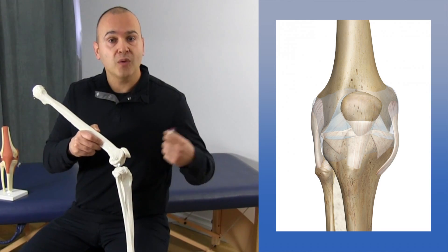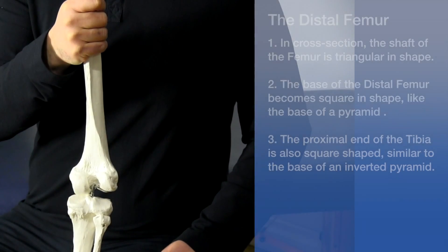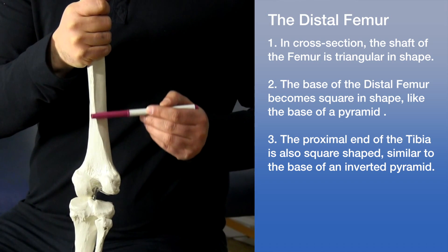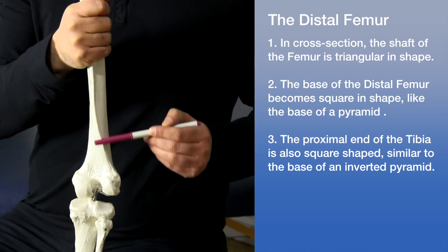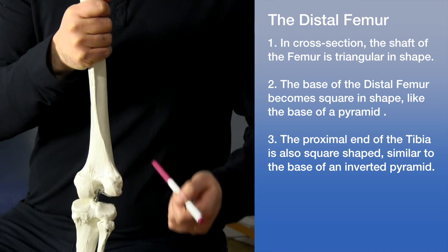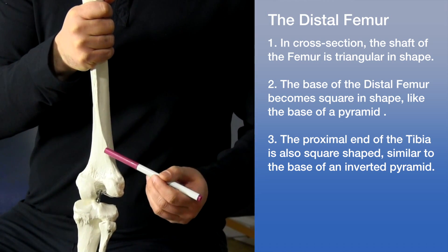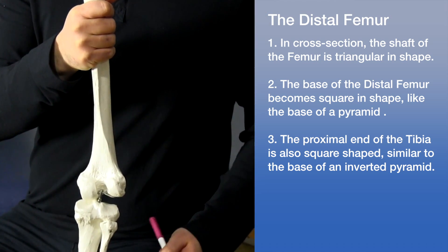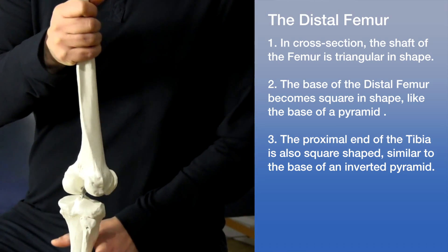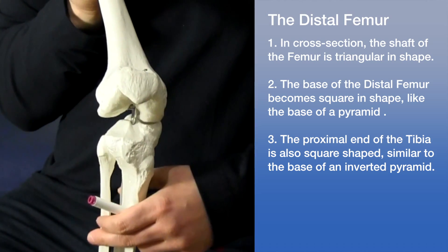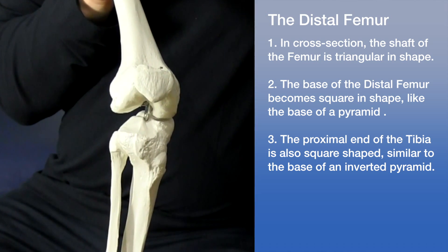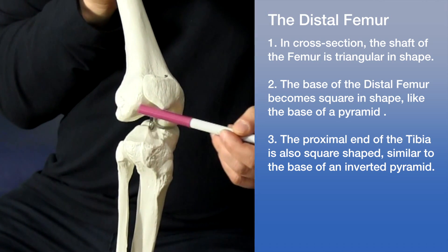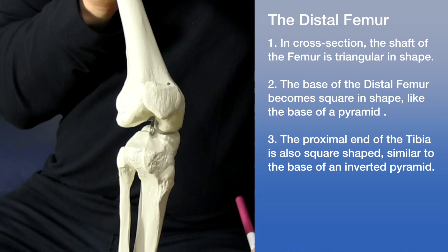Let's start our discussion with the distal femur and talk about its shape. The distal shaft of the femur is triangular in cross section, which you can really see from the posterior angle here — two ridges coming up, and if you were to cut through it, it would look like a triangle in cross section. At the distal end of the femur, the shape is more square in appearance, similar to the base of a pyramid.